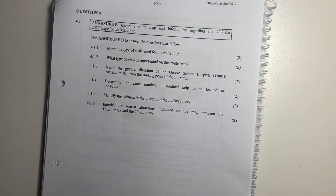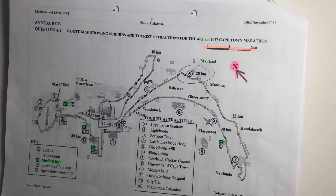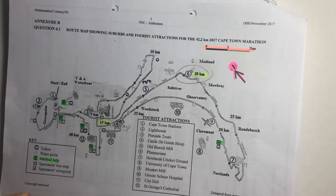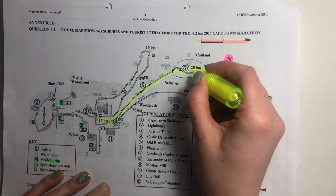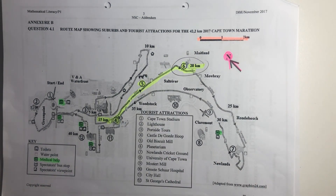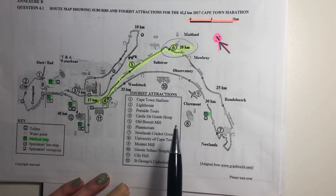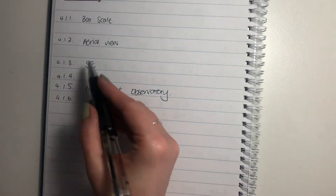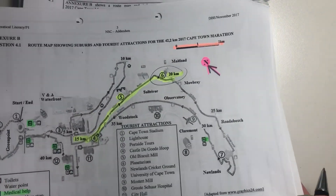Let's do our last question for this video. It says, identify the tourist attractions indicated on the map between the 15 kilometer and 20 kilometer mark. Get yourself a highlighter so you know what's going on. Here's 15 kilometers, here's 20 kilometers — so it's basically between those two points, anywhere along this route. It's fairly obvious that what I'm looking at is four, five, and six. You can write four, five, and six, but what would be more accurate is to write what they are: Castle de Routerweb, Old Biscuit Mill, and Planetarium. And we are done with this question and for this video.